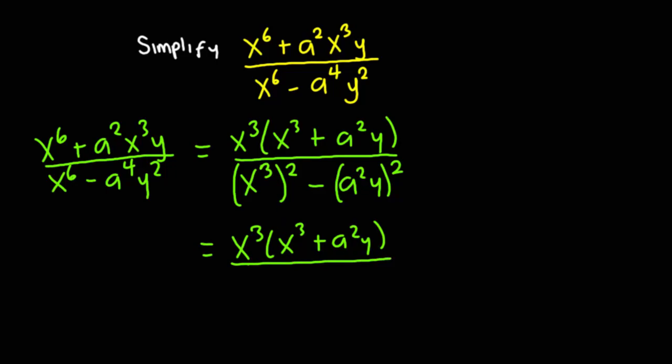now because this is difference of 2 squares, this is given by x cubed minus a squared y multiplied by x cubed plus a squared y. And so,